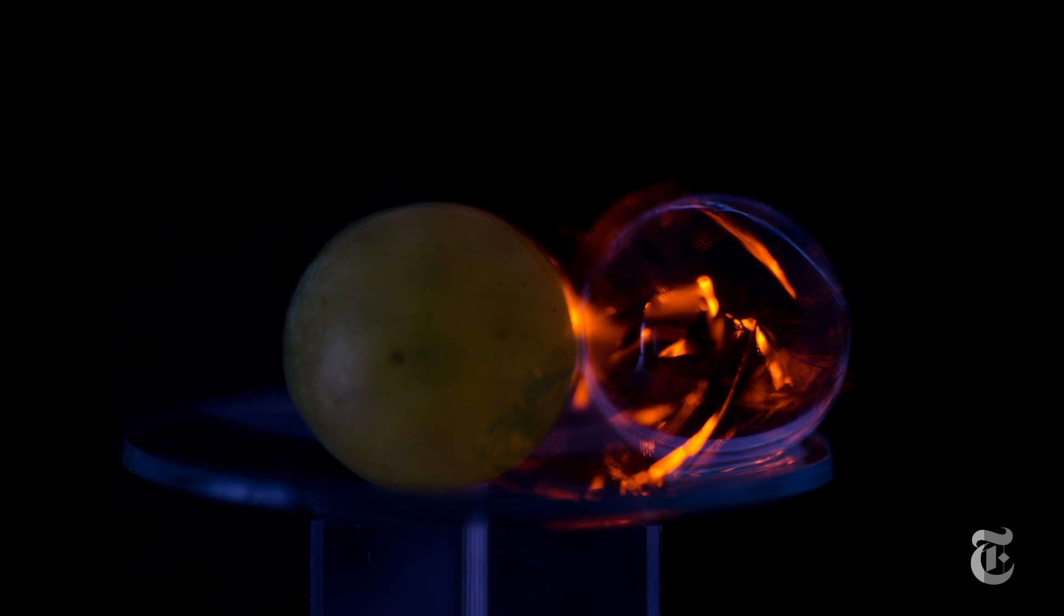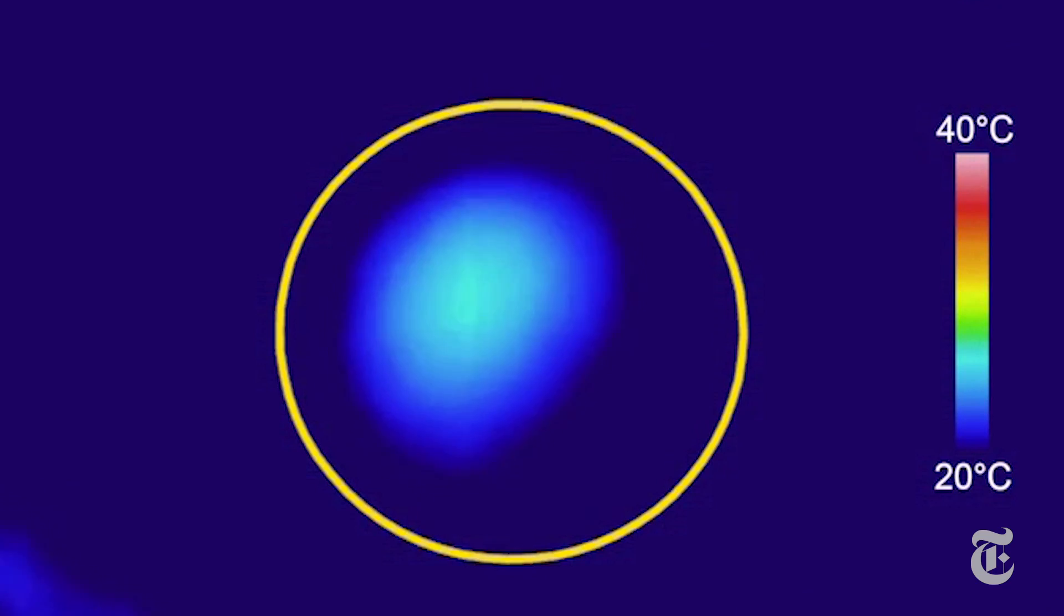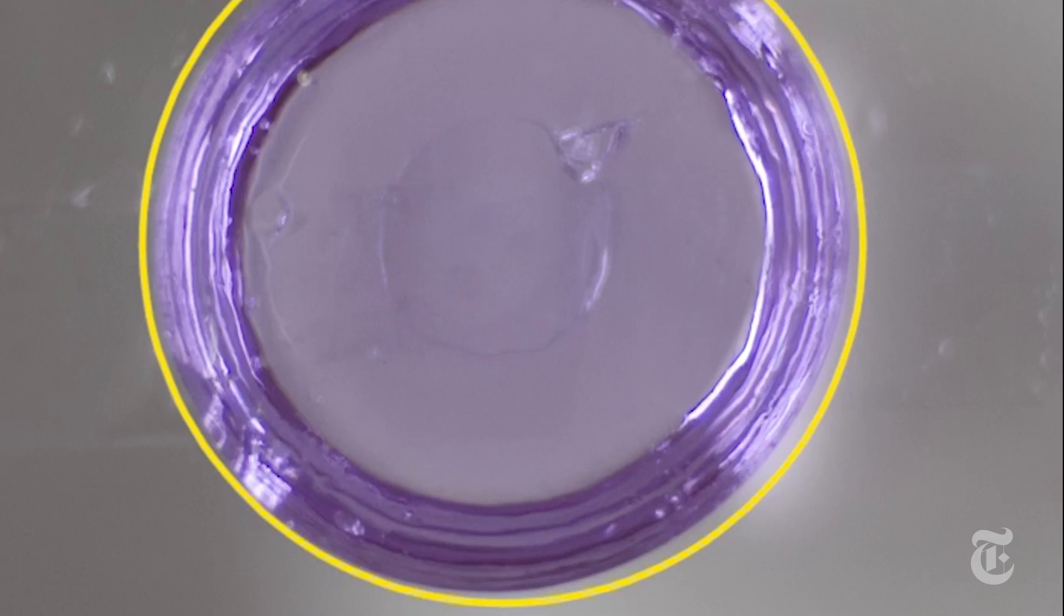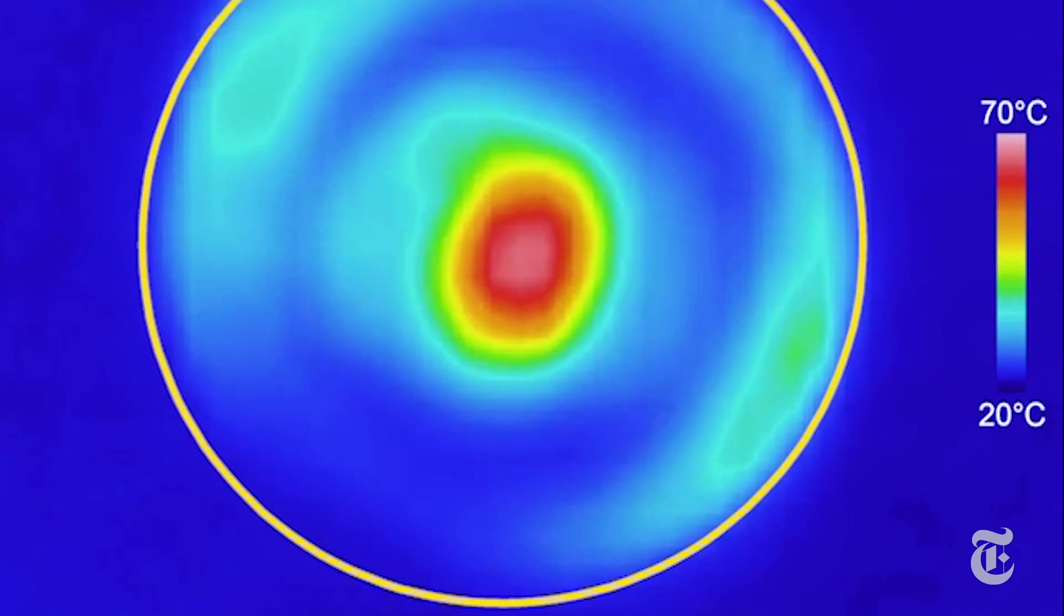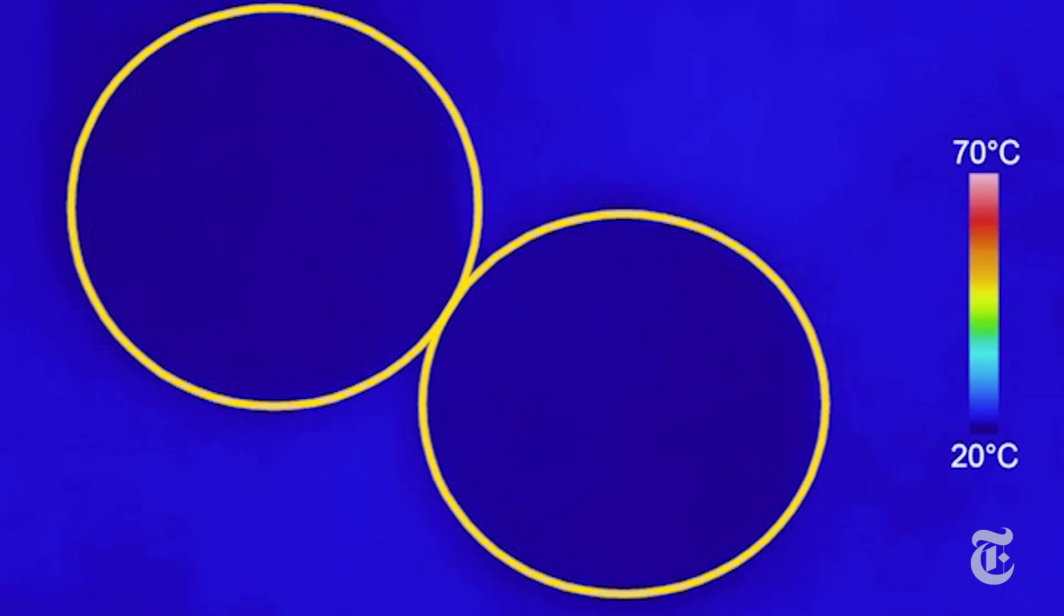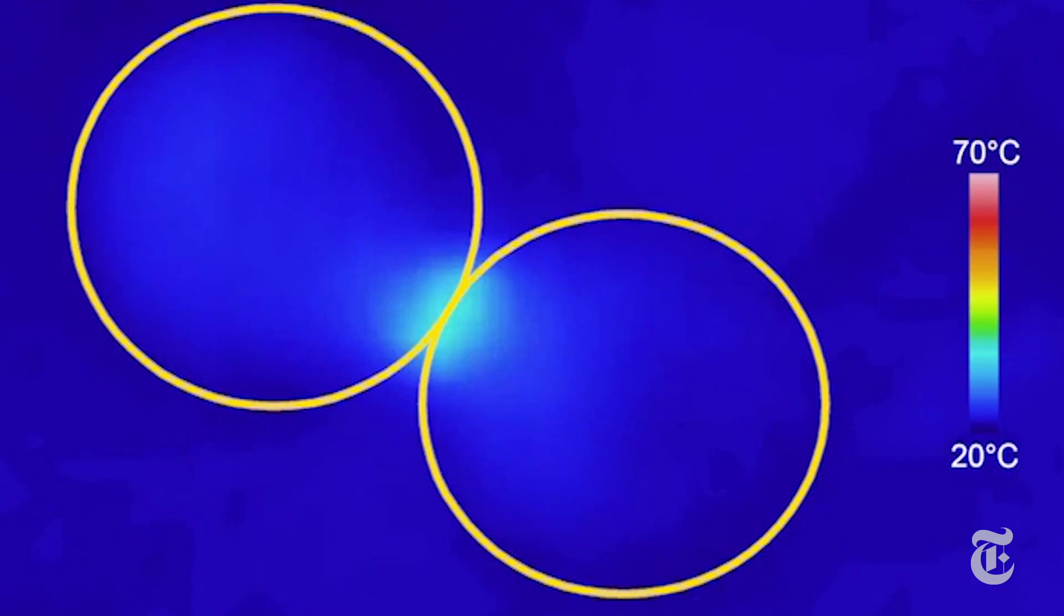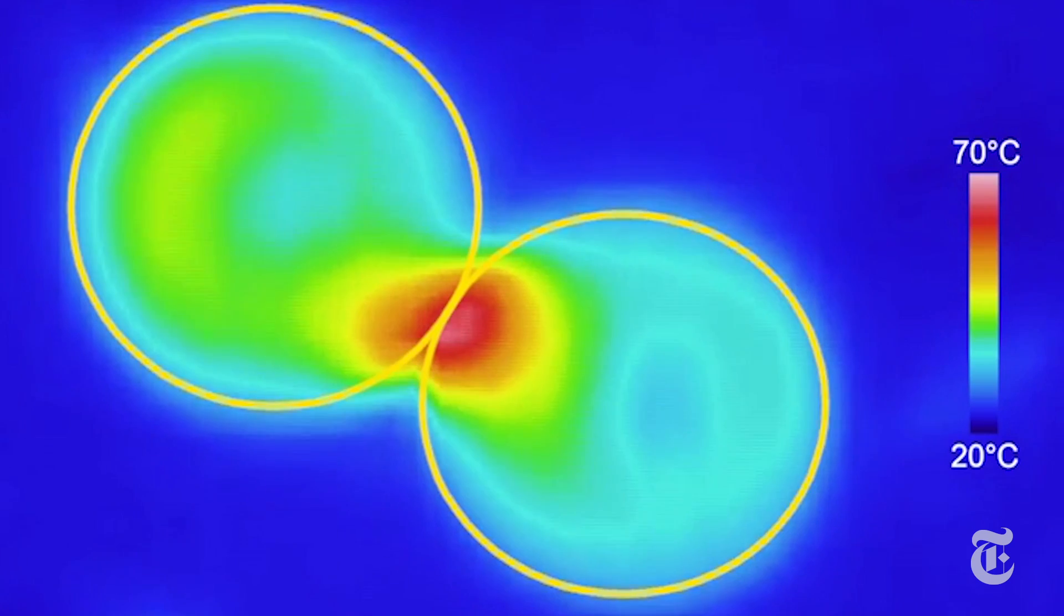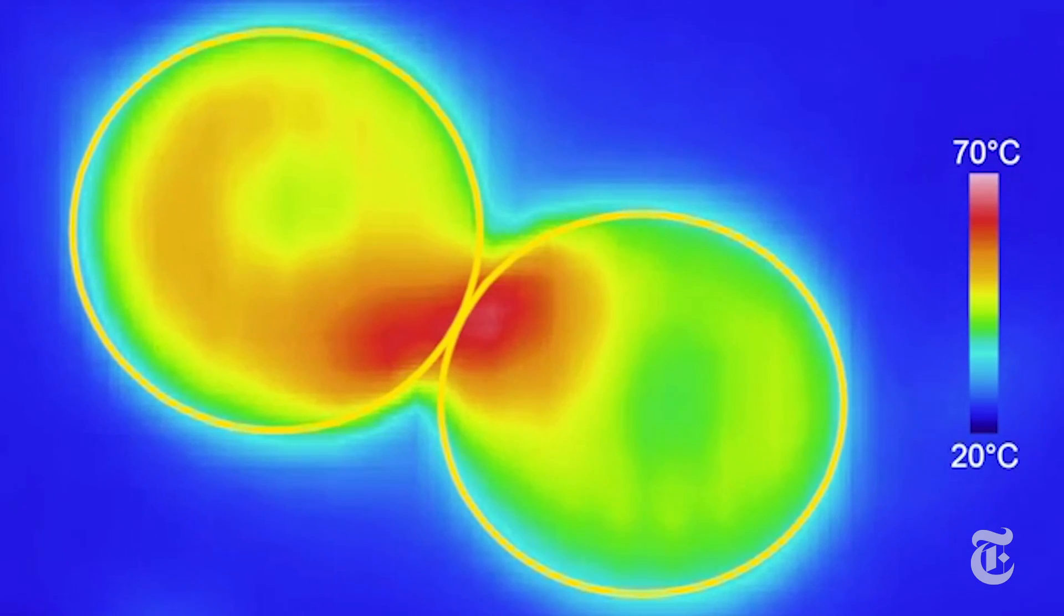But that's not what really excited the scientists. They were interested in the hot spots where the grapes meet. You can see them in red. Microwaves in that region were about 80 times smaller than in air. And that was a real surprise to the scientists because water worked on microwaves in a way that had never been seen.